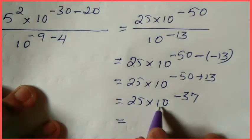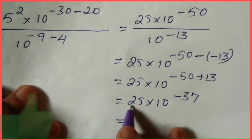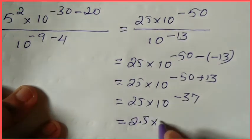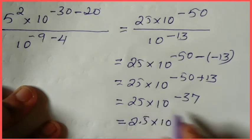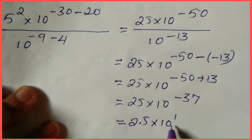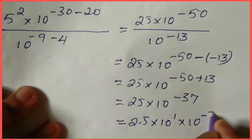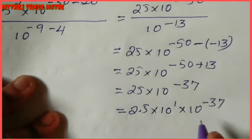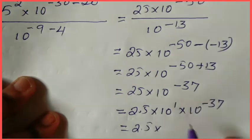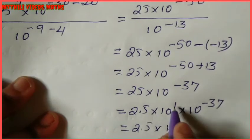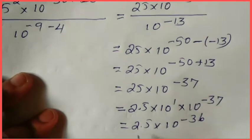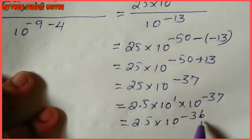Now convert 25 × 10^(minus 37) into scientific notation. 25 = 2.5 × 10^1. So we have 2.5 × 10^1 × 10^(minus 37). Since bases are equal, add powers: 1 plus minus 37 = minus 36. The final answer is 2.5 × 10^(minus 36).